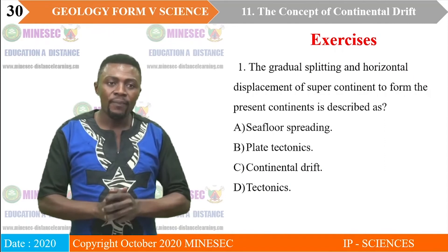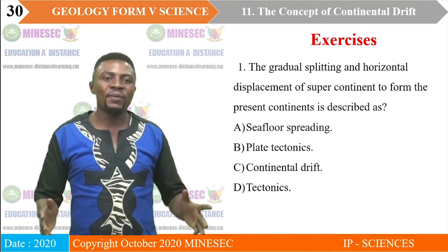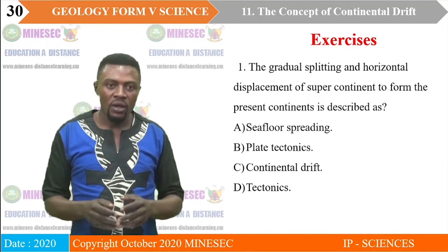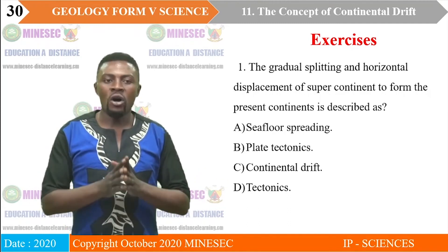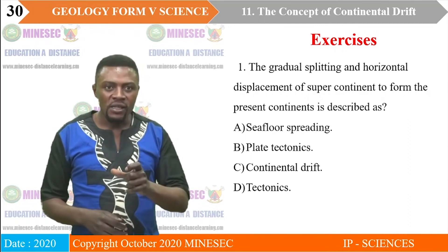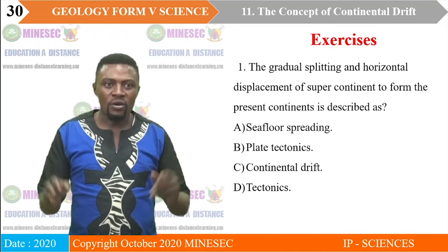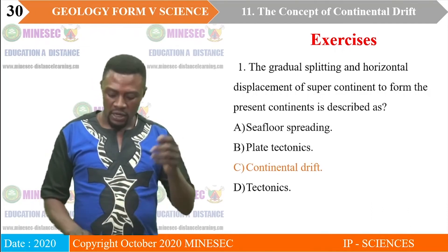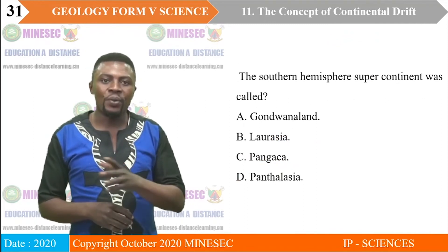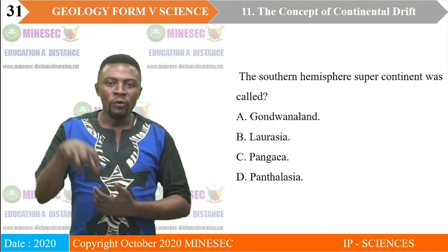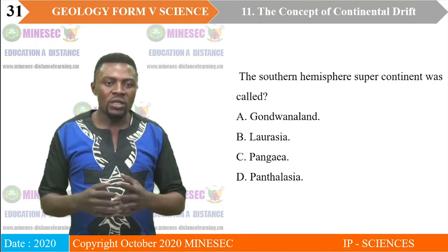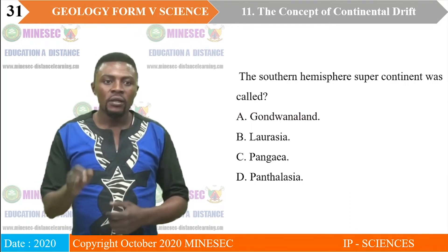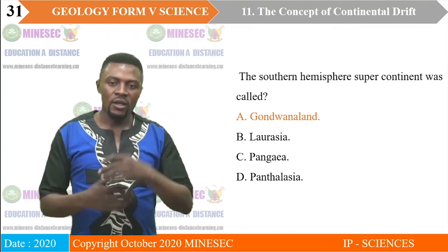Exercise one: The gradual splitting and horizontal displacement of a supercontinent to form present-day continents is described as — sea floor spreading, plate tectonics, continental drift, or tectonics? The correct answer is continental drift. Exercise two: The southern hemisphere supercontinent was called — Gondwana Land, Laurasia, Pangaea, or Panthalassa? The correct answer is Gondwana Land.